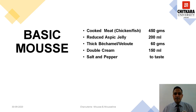The basic recipe for a Mousse consists of: cooked meat 450g, reduced aspic jelly 200ml, thick béchamel or velouté 60g, double cream 150ml, and salt and pepper as per taste.